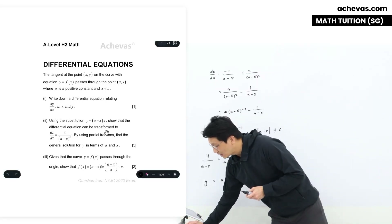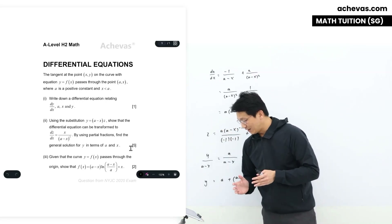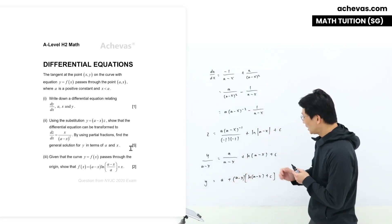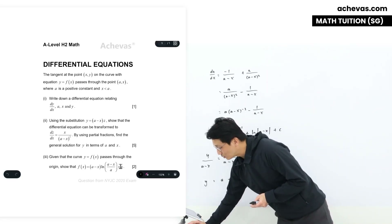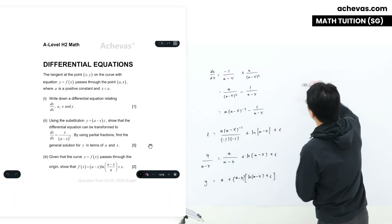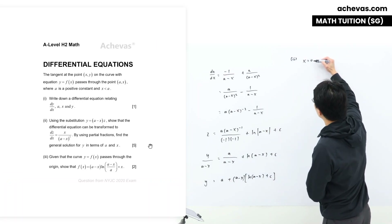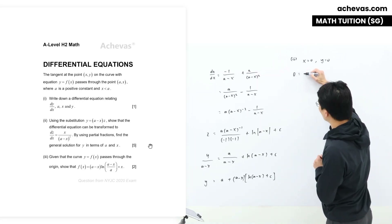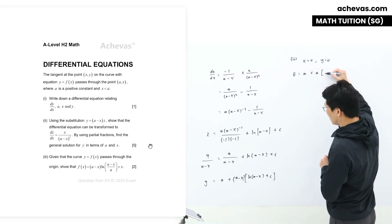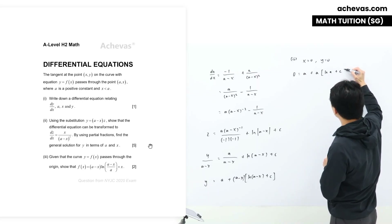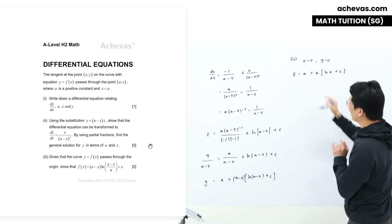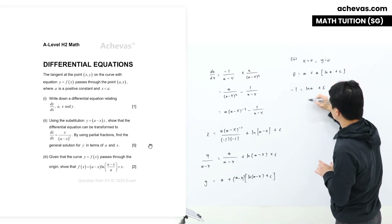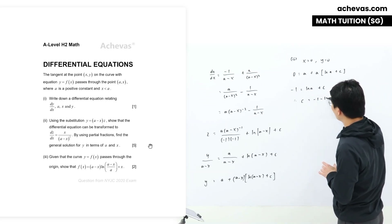The next part says that the curve passes through the origin. So x = 0, y = 0 satisfies this general solution. Substituting these values: 0 = a + a·ln(a) + C·a. Shifting terms and dividing both sides by a: minus 1 = ln(a) + C. Therefore, C = minus 1 minus ln(a).